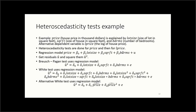Now for a practical example: house prices (in thousands of dollars) explained by lot size (square feet of the lot), square footage of the house, and number of bedrooms. The model is: price regressed on lot size, square feet, and bedrooms. We also explore log(price) as an alternative dependent variable and conduct heteroscedasticity tests for both. From the original regression we get residuals u-hat and square them to get u-hat².